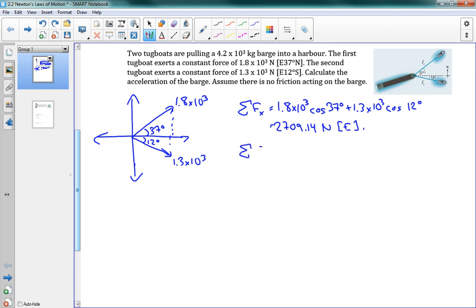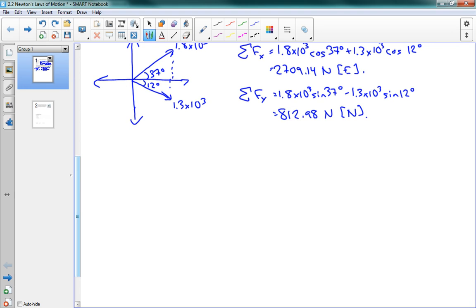We want to do the net y force. Same thing, 1.8 times 10 to the 3, now using sine, and that one was up. The other one is down. This gives us an answer of 812.98 newtons north.